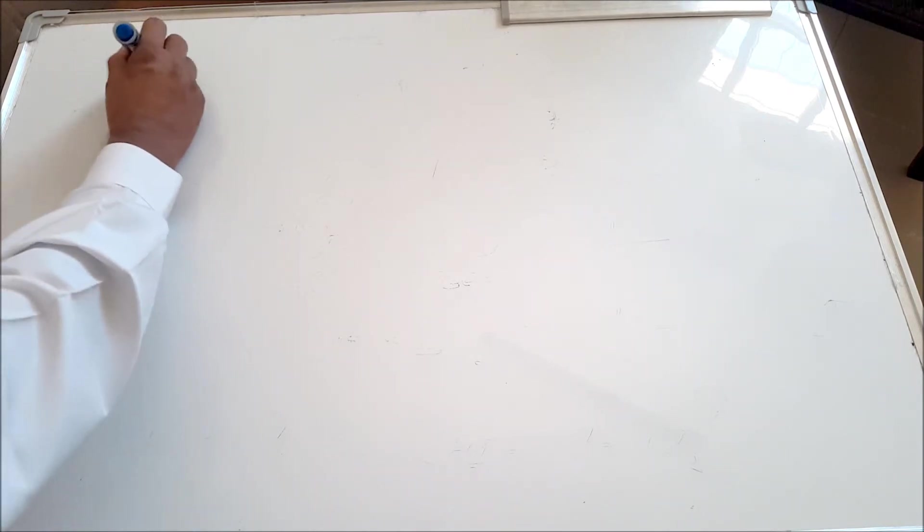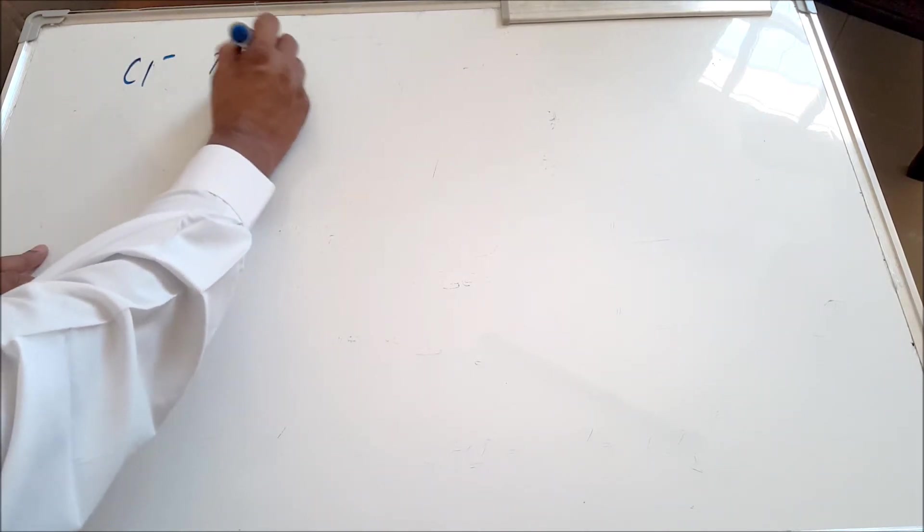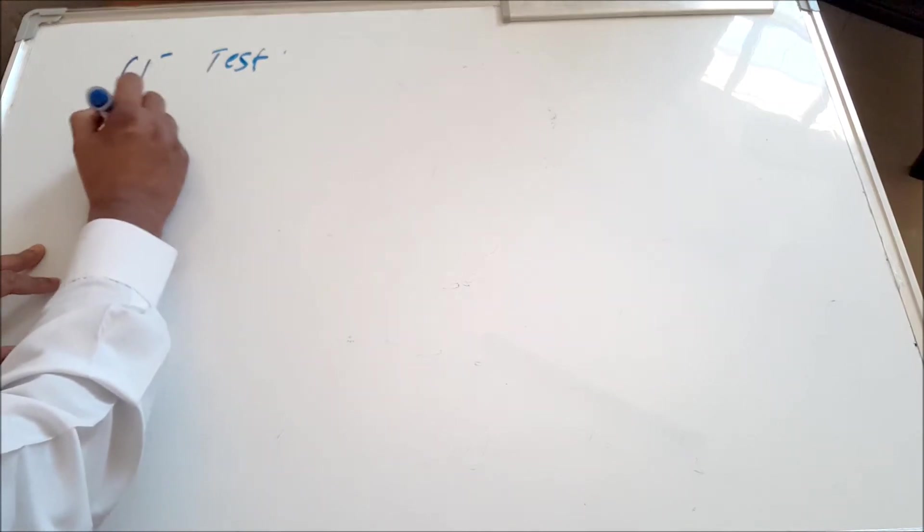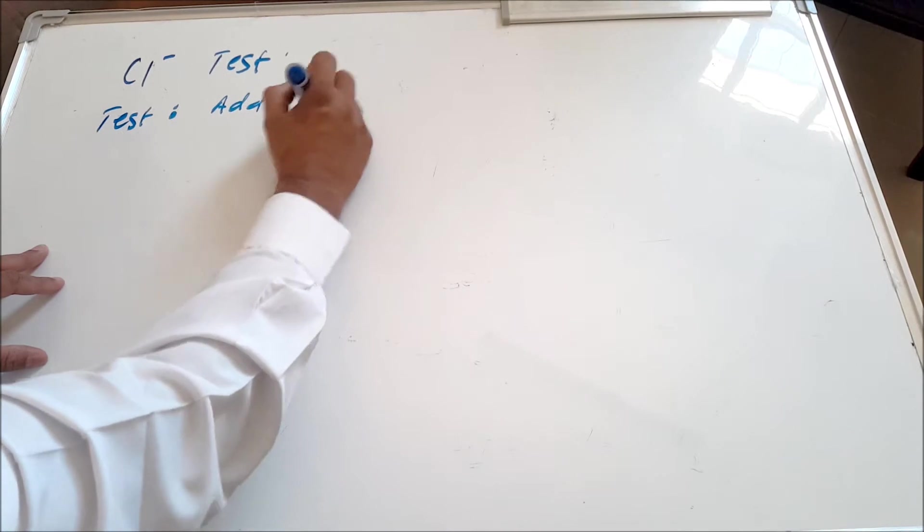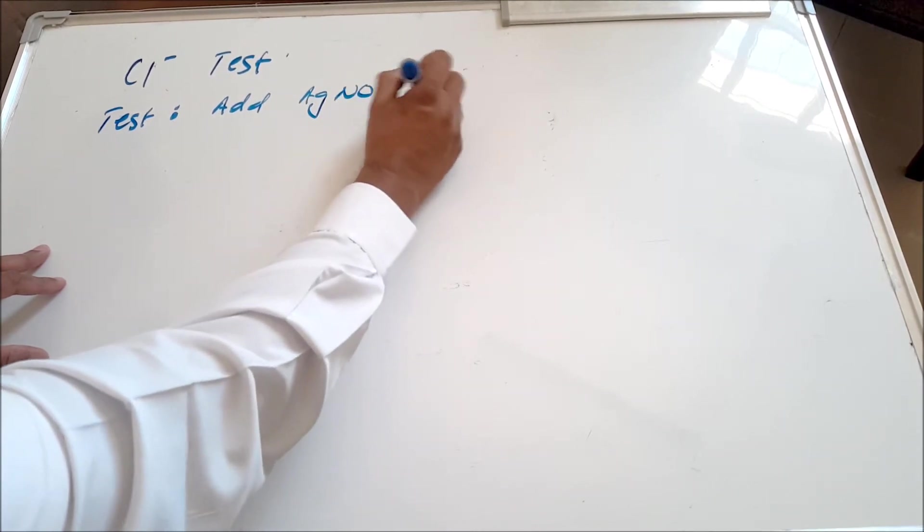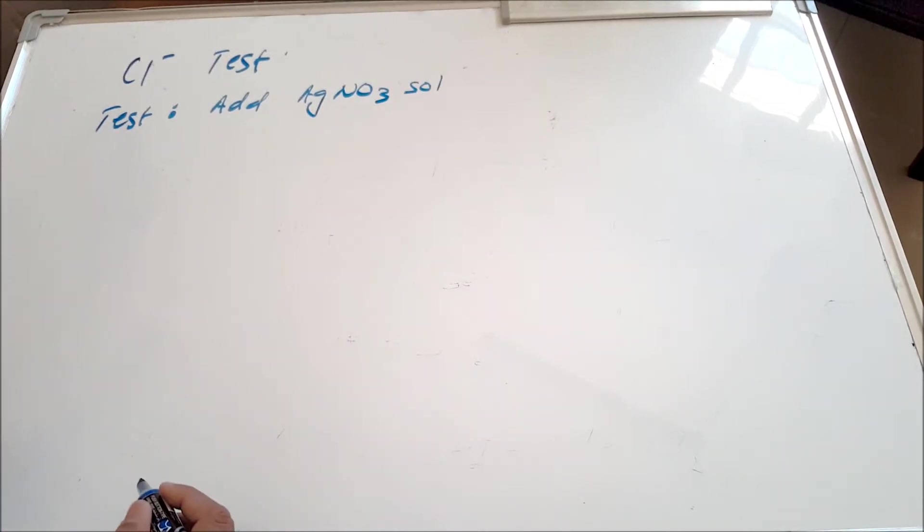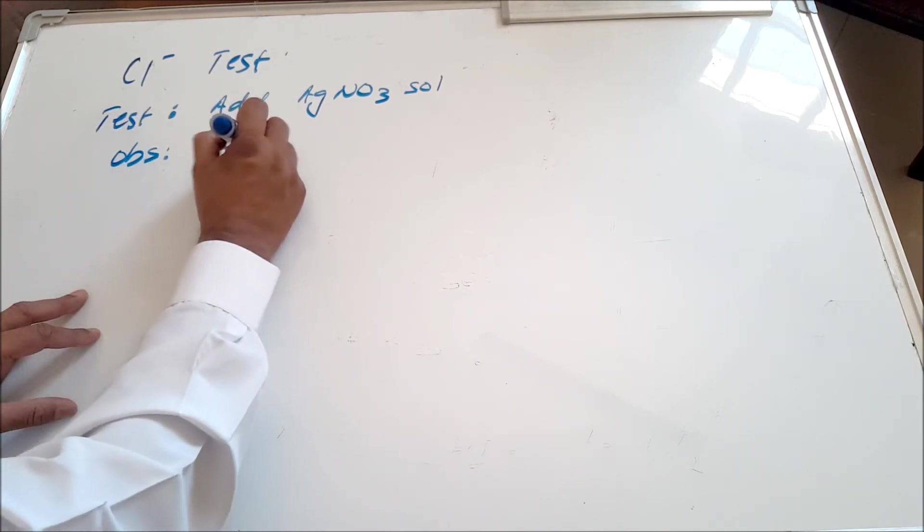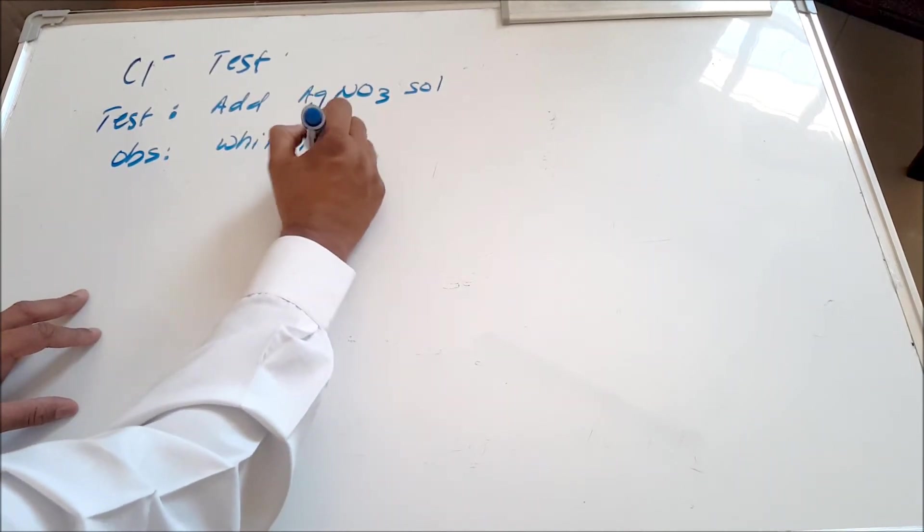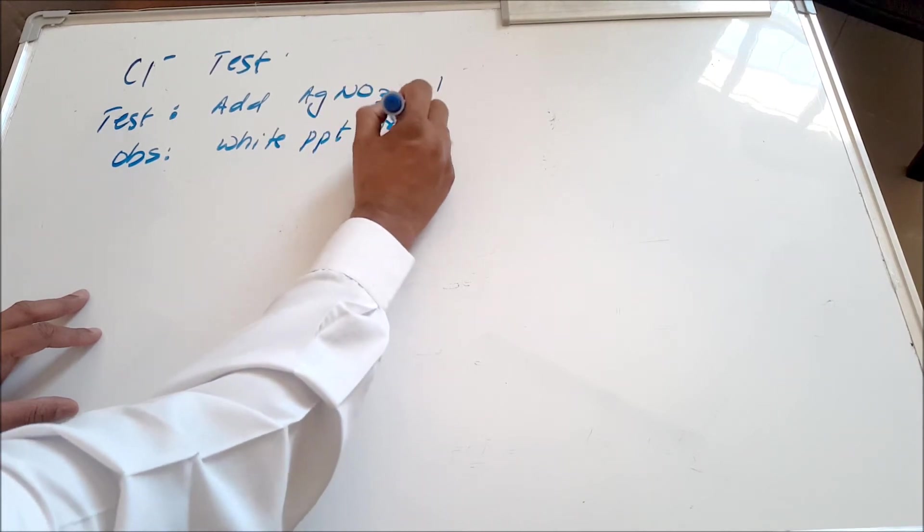For example, if you look at the test for chlorine, what are you going to do? You're going to add a silver nitrate solution, AgNO3 solution into it, and the observation that you will see is a white precipitate being formed.